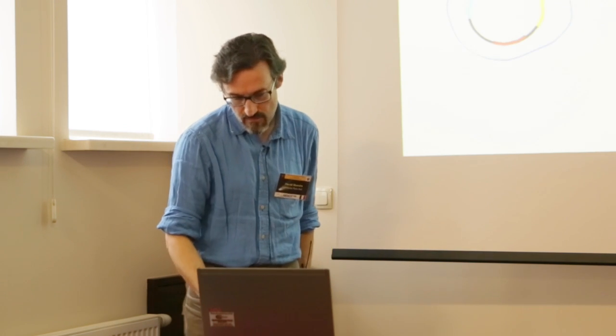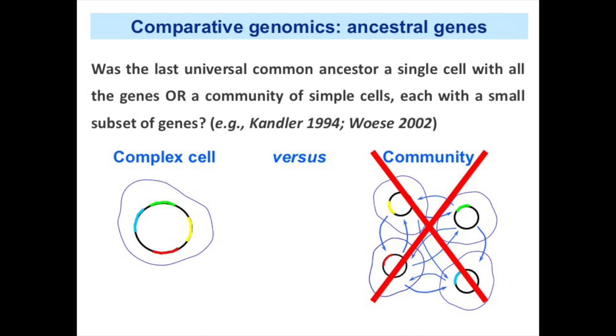I think this is a very unstable system with very low capacity to evolve. I personally prefer to think that the last common ancestor was rather a complex cell with a more or less large genome. Of course, as Peter said on Monday, it was not alone on Earth — it was in company of and in interaction with other cells — but I think it was already a relatively complex entity.